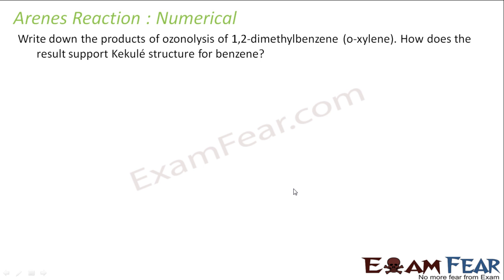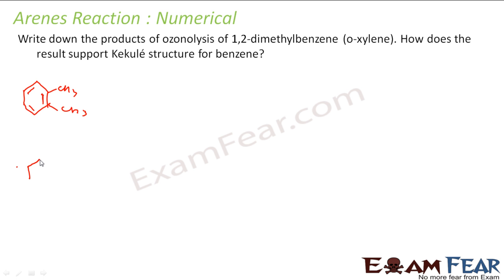The next question asks to write all products of ozonolysis of 1,2-dimethylbenzene and explain how the result supports the Kekulé structure. According to Kekulé, 1,2-dimethylbenzene has two possible structures — one where the double bond is between the two carbons bearing the methyl groups, and another where it is not. In ozonolysis, the double bond breaks and is replaced by a ketone on each carbon.